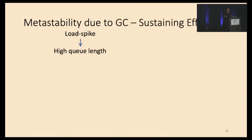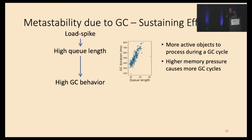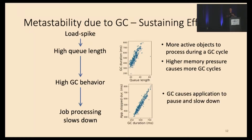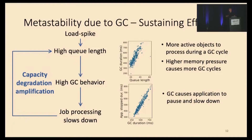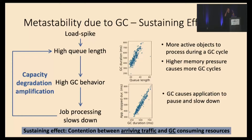First, your system is running in a vulnerable state. A load spike brings initial high queue lengths (QLens). Because of high QLens, it leads to high GC behavior — there are more active objects to process during a GC cycle, as well as higher memory pressure causing more GC cycles. In our experiment, we observe a positive correlation between QLens and GC duration. Furthermore, high GC behavior slows down job processing because GC causes the application to pause. We also observe a positive correlation between GC duration and application stop duration. Due to job slowdown, more queue builds up, completing the capacity degradation amplification feedback loop. The sustaining effect of GC is a contention between arriving traffic and garbage collection consuming resources.